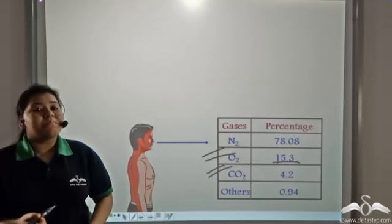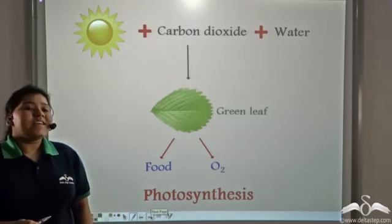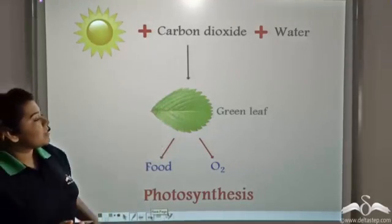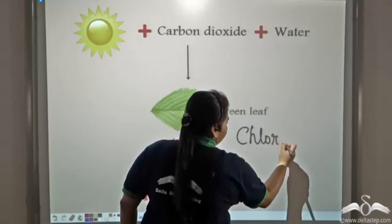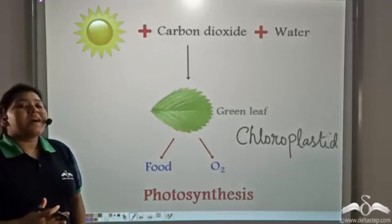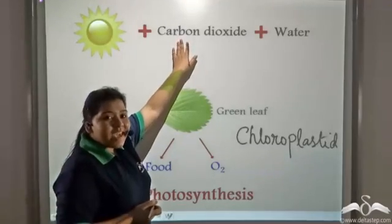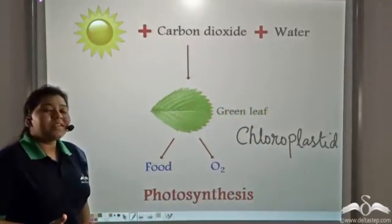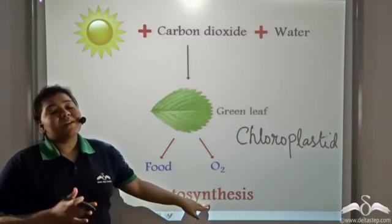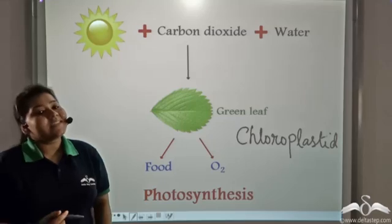How is this balance maintained? This balance is maintained by green plants because of the presence of a special plastid known as chloroplastid. These chloroplastids absorb sunlight and together with carbon dioxide from the air and water from the soil, manufacture food and give out oxygen by the process of photosynthesis. Because of photosynthesis, this balance between oxygen and carbon dioxide is maintained in the atmosphere.